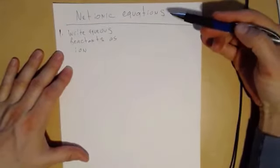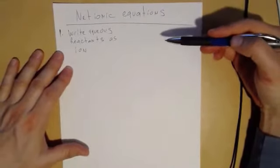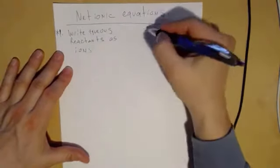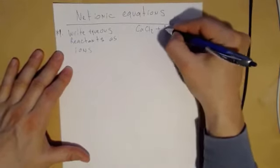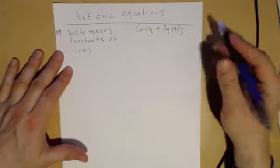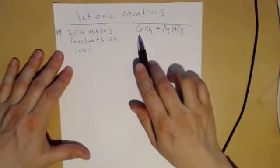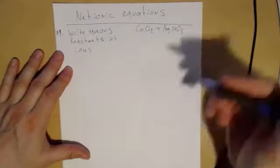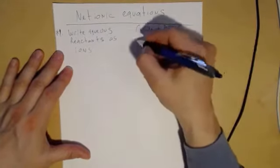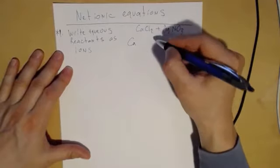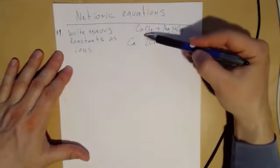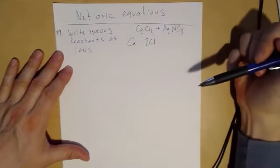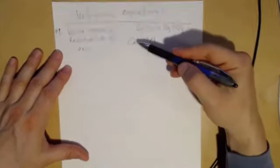So doing net ionic equations, I'm going to go through the quick case again. You want to write aqueous reactants as ions. This is actually one of the hardest steps if you can do this. So let's say I have calcium chloride and I'm reacting with silver nitrate. What are the ions from calcium chloride? What does that break apart to? And so I have to recognize this, that that's a calcium and there's two chlorines. That's really important to be able to recognize this as three different things, right? And then what's the charge of the calcium?